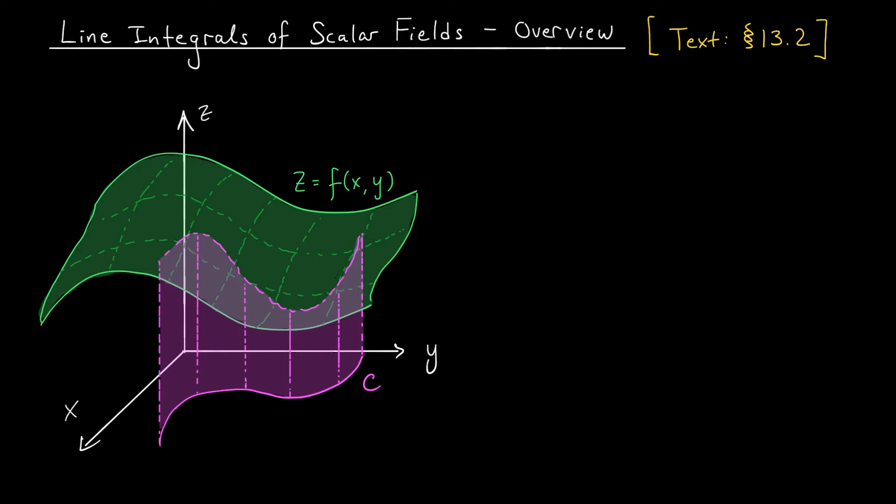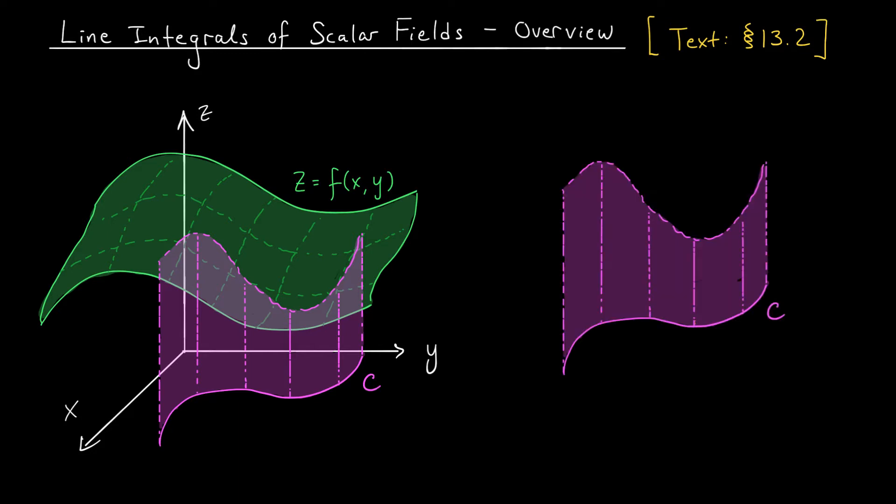Well, back in Calc 2, you defined the integral by chopping up your region into a bunch of tiny pieces, and on each piece, you estimated the area using a rectangle. We are going to try the same thing here. We're going to chop up our region into a bunch of tiny pieces, and on each piece, we're going to say, okay, this is just an approximation, but my area is pretty close to the area of this rectangle, which is the height of our function at some point, f(x_i*, y_i*), times this tiny change in width at the bottom.